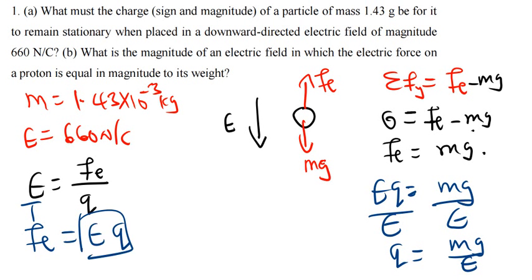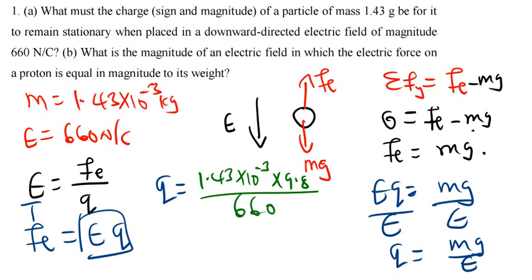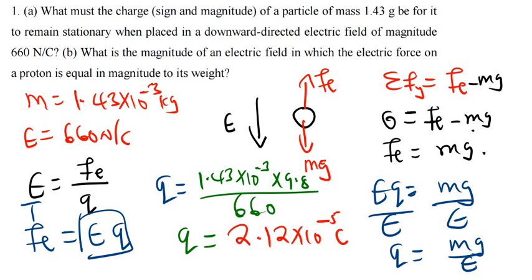Let's plug in the values. The charge Q = (1.43 × 10⁻³ × 9.8) / 660. Calculating this and putting it in scientific notation gives Q = 2.12 × 10⁻⁵ coulombs. That is the magnitude of the charge.